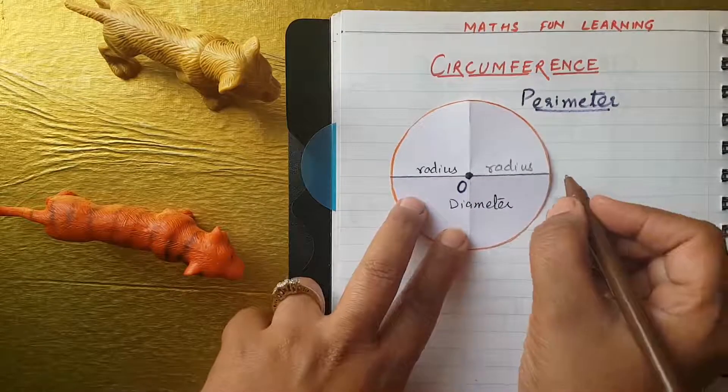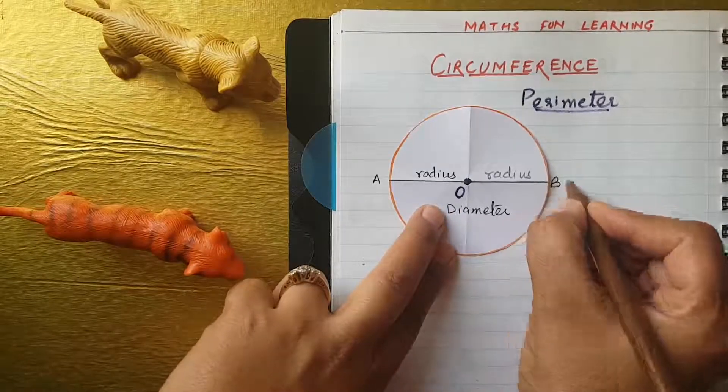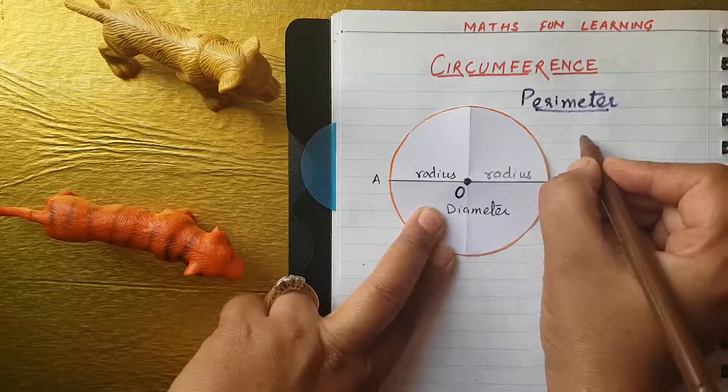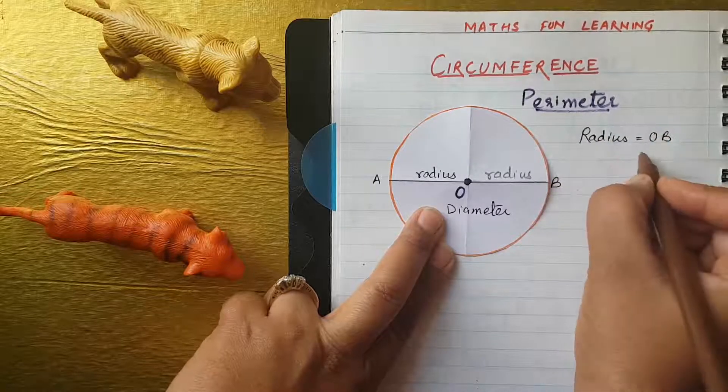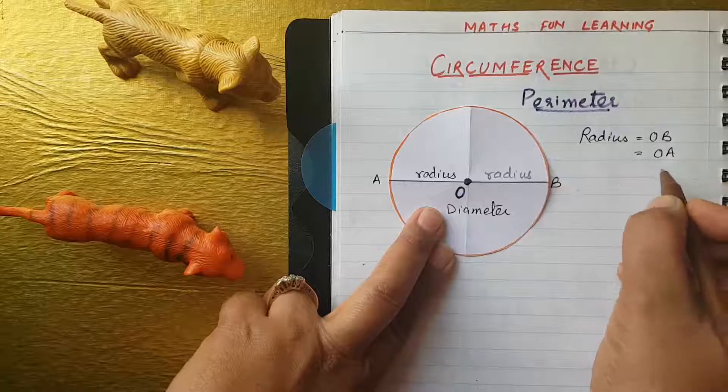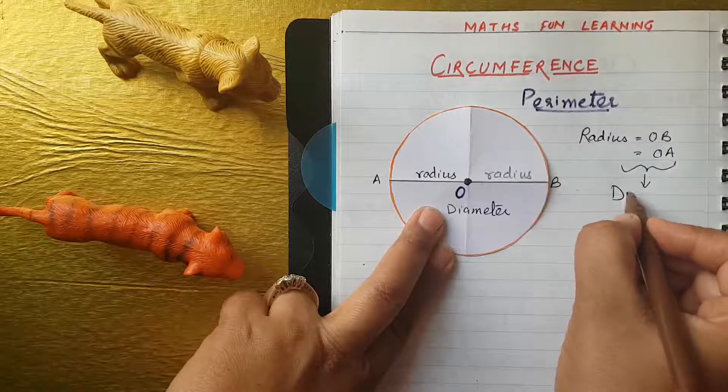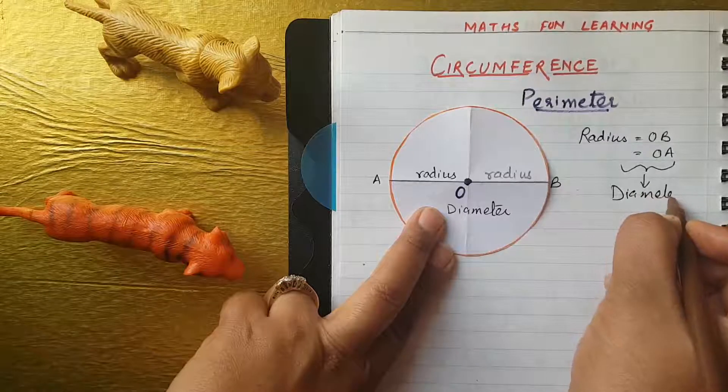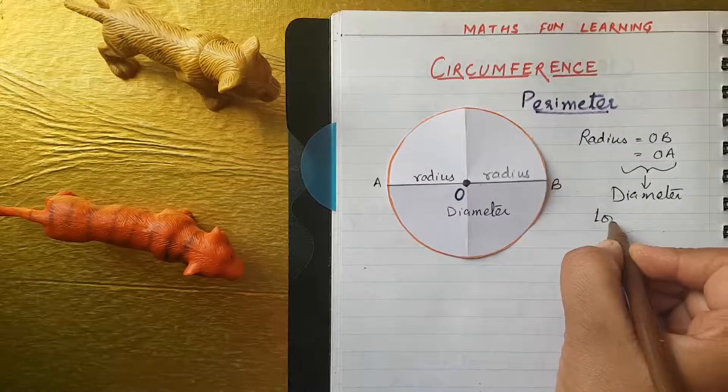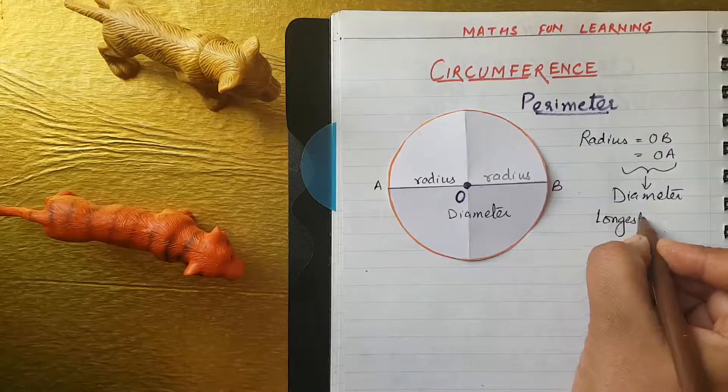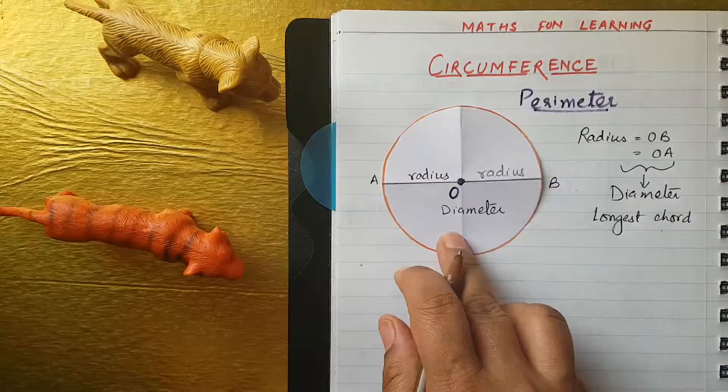So, this big line is called a diameter. And here you can see, from the center, you can see, diameter means there are two radius. One is here, one is here. I will just mark it. A and B. So, you can see, there are two radius. Radius OB and OA, which both are, gives you a diameter. This is the length of the diameter. And diameter is also called a longest cord. Longest cord of the circle.